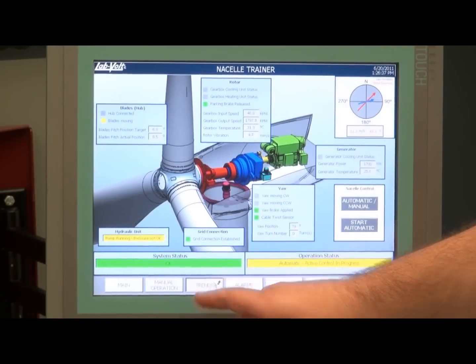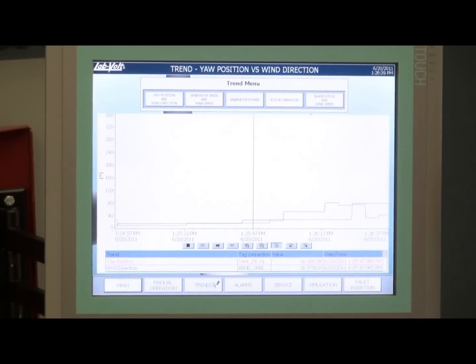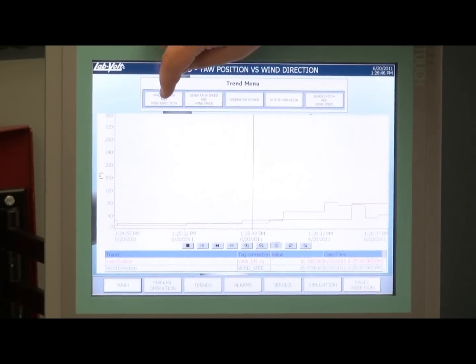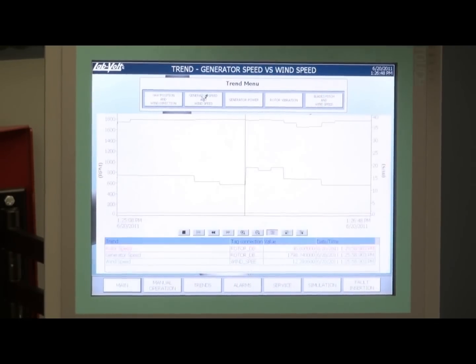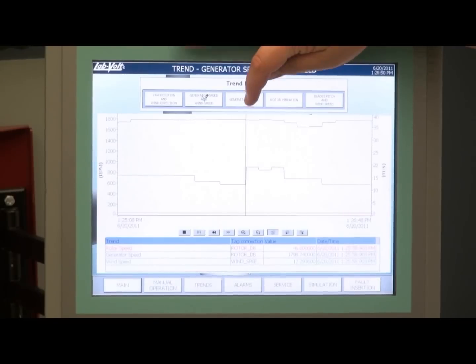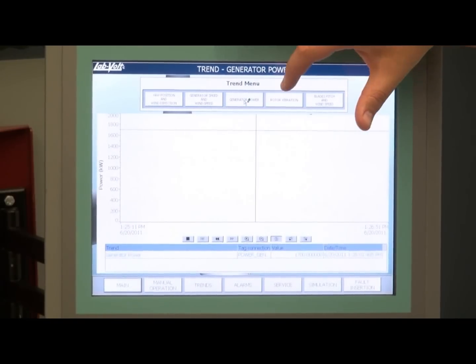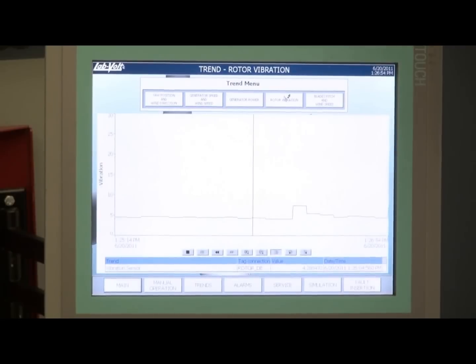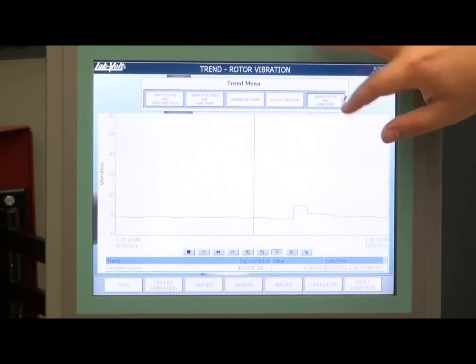A trend section is available in the HMI to display some important parameters in the nacelle control, like the yaw position versus the wind direction, the generator speed versus the wind speed, the generator power, the rotor vibration, and the pitch blade versus the wind speed.